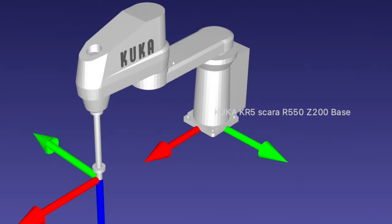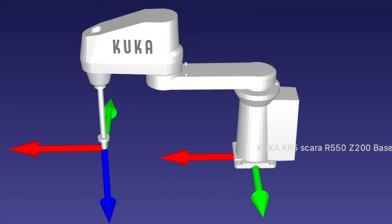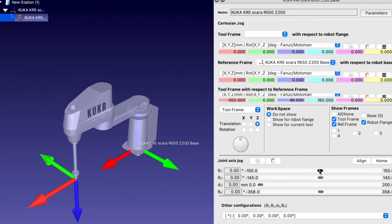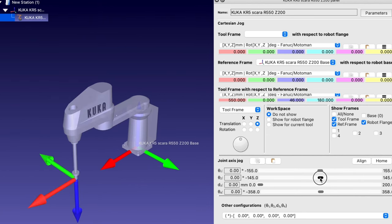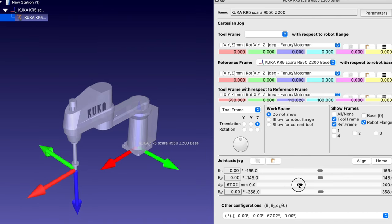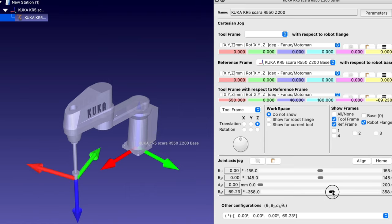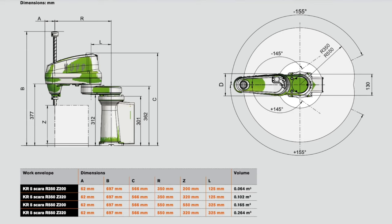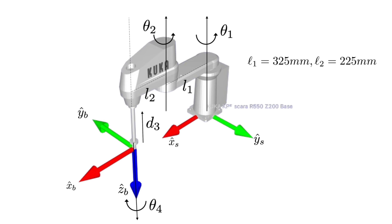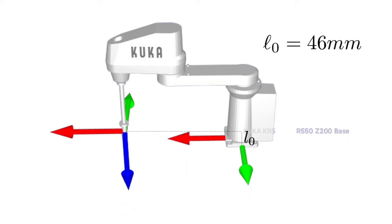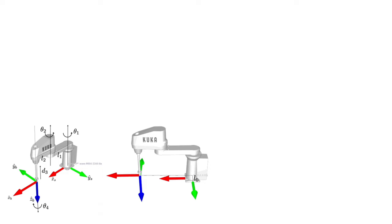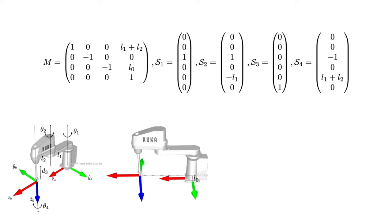Let's now take a look at an example where a prismatic joint is used. Consider the RRPR KUKA SCARA robot. This figure shows the robot in zero position, including a side view. This robot has three rotational degrees of freedom and one translational degree of freedom, making it a useful pick-and-place robot. The set of joint variables is Q = {theta1, theta2, d3, theta4}. From the robot's technical specs, L1 equals 325 mm, L2 equals 225 mm, and L0 equals 46 mm. Following the steps to calculate forward kinematics using screw theory, we can write matrix M and the screw axes as a set of equations.